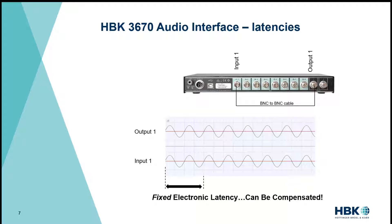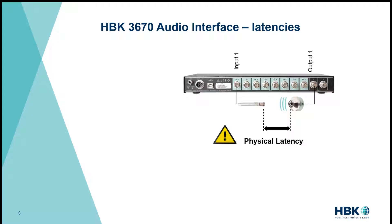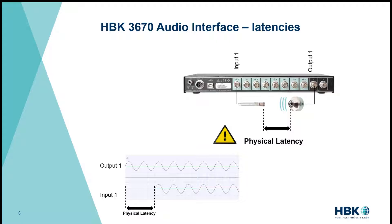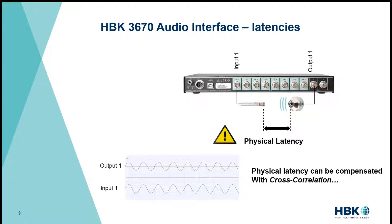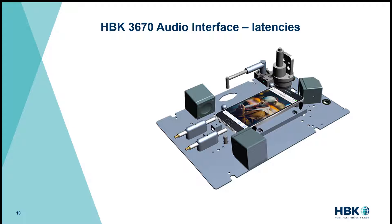There's another latency we have to take into account which is the physical latency between transducers. In this case it's a microphone in an artificial mouth, and due to the distance between the two transducers we have a physical latency that impacts synchronization. We can use cross-correlation techniques to estimate the time delay and compensate for it. In a quality control test station with fixed microphone and speaker locations, the physical latency is identical for all measurements, and since the 3670 has fixed electronic latency you can measure the total latency once and never calculate it again, saving precious processing time.